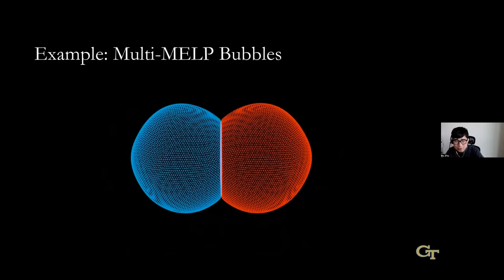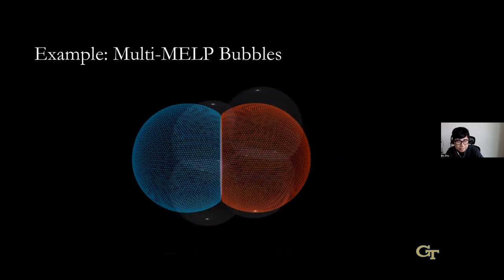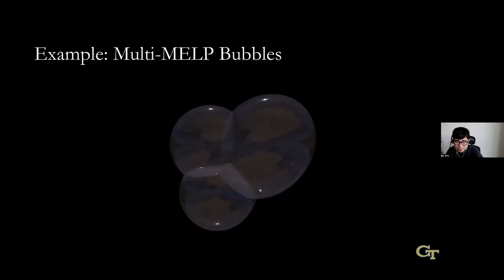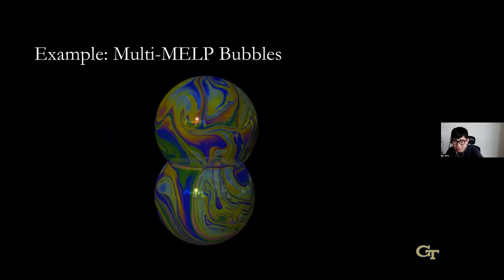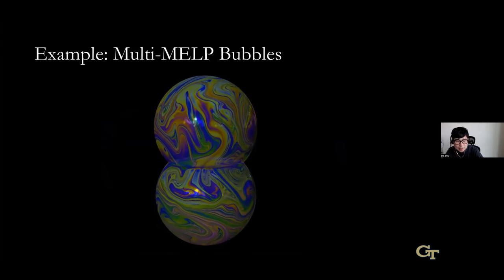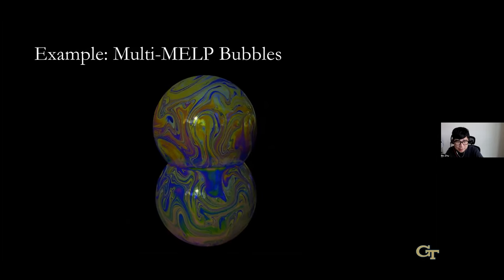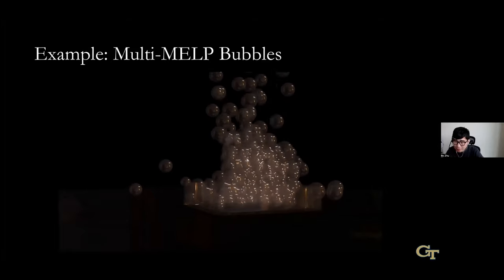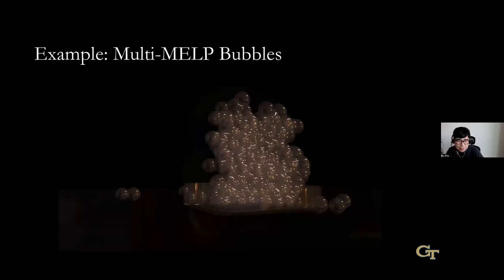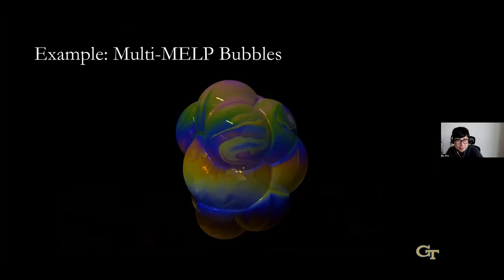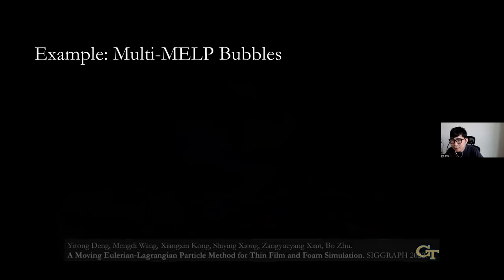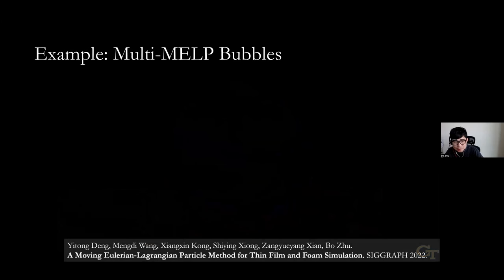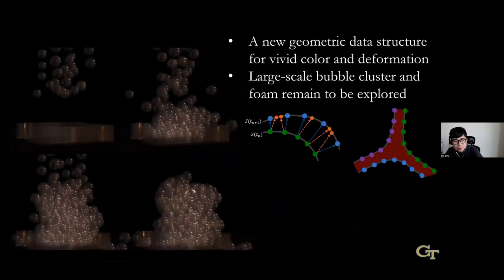This design lets Lagrangian particles capture high-frequency flow details while Eulerian particles provide a robust background discretization for PDE solving. As a byproduct, we can handle topological evolution of bubbles — instead of managing non-manifold mesh connectivity, we just let particles get close to each other to describe junctions almost for free. This new simulation, published in SIGGRAPH 2022, captures very detailed turbulent flow and interactions among different bubbles and films. We can simulate hundreds of bubbles simultaneously with our new data structure.